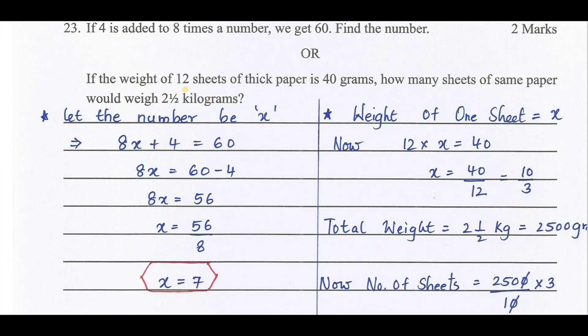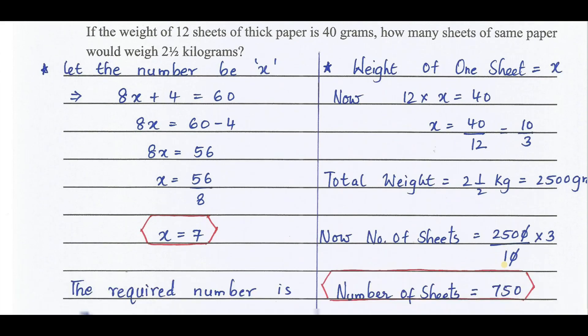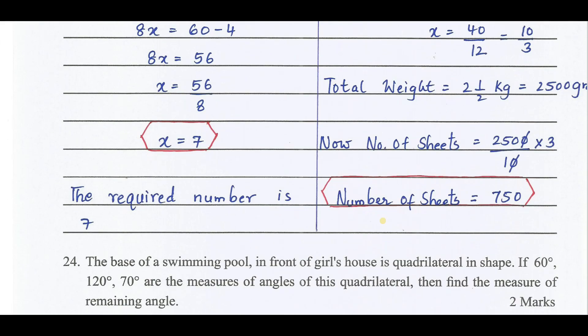If the weight of 12 sheets of a thick paper is 40 grams, find the number of sheets in 2.5 kg. Let us assume the weight of one sheet as x. Therefore, 12 times one sheet equals 40. x equals 40 by 12. Weight of one sheet is 10/3 grams. Now, total weight is 2 and a half kg converted into grams, we get 2500 grams. Number of sheets equals total weight by the weight of each sheet. That is 2500 by 10/3, it becomes 2500 into 3 by 10. We get number of sheets equals 750.